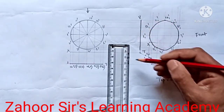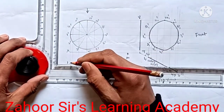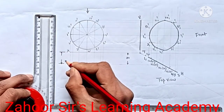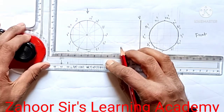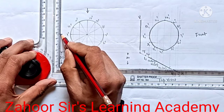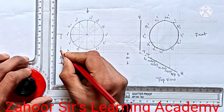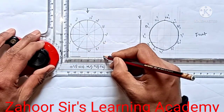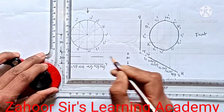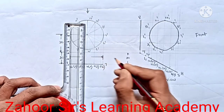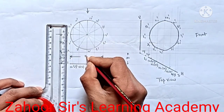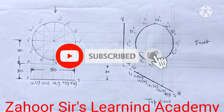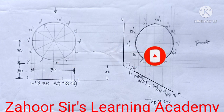After showing the traces we show the major dimensions. This line was 20 mm away from the VP. The center was 30 mm from the XY line. The diameter of the circle was 50 mm. We need to show these major dimensions. That is all — I hope you enjoyed this question. If you enjoyed it please subscribe to my channel, share it with your friends, and press the bell icon. Thank you very much for watching.